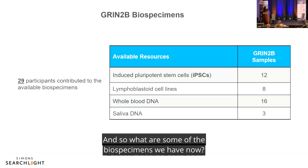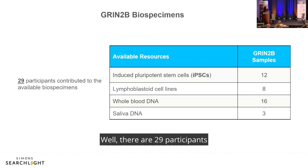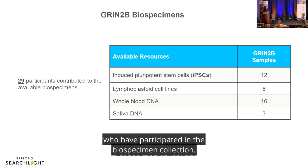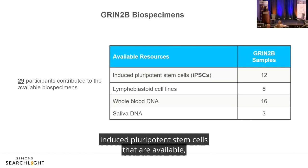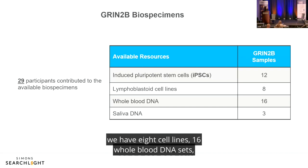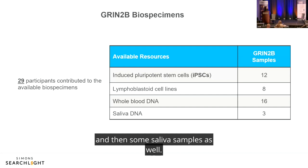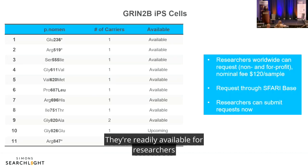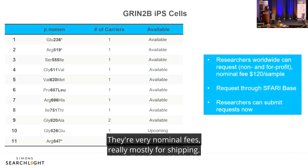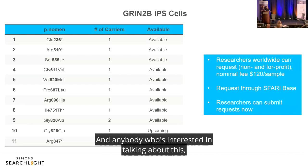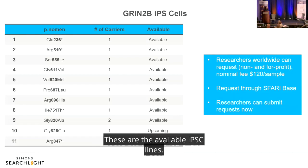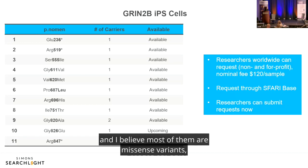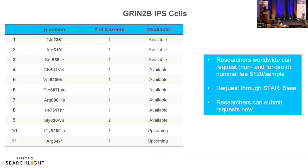There are 29 participants who have participated in biospecimen collection. Currently there are 12 patient-derived induced pluripotent stem cell lines available, 8 cell lines, 16 whole blood DNA sets, and some saliva samples. These are readily available to qualified researchers at nominal fees — mostly for shipping. The majority of the available IPSC lines are missense variants, with a few truncating variants as well.